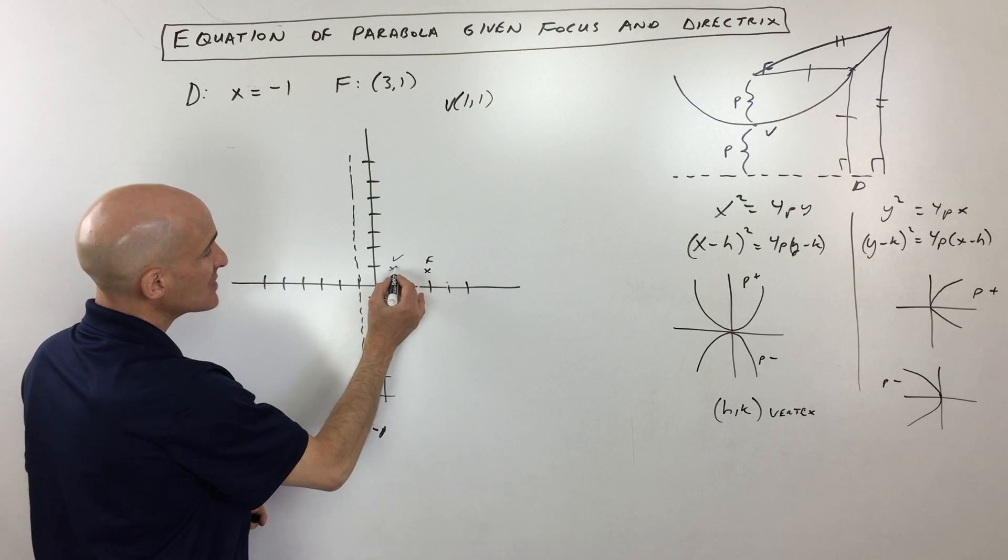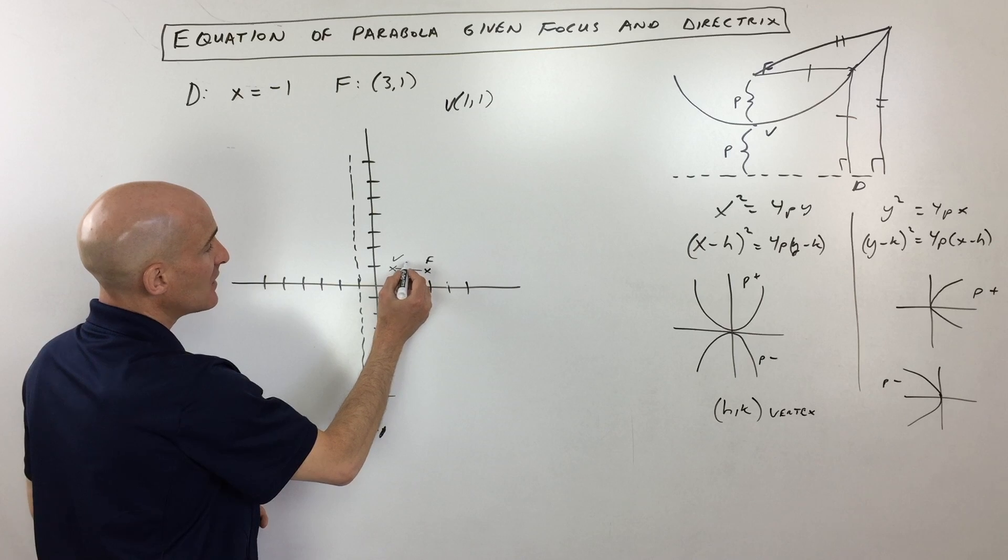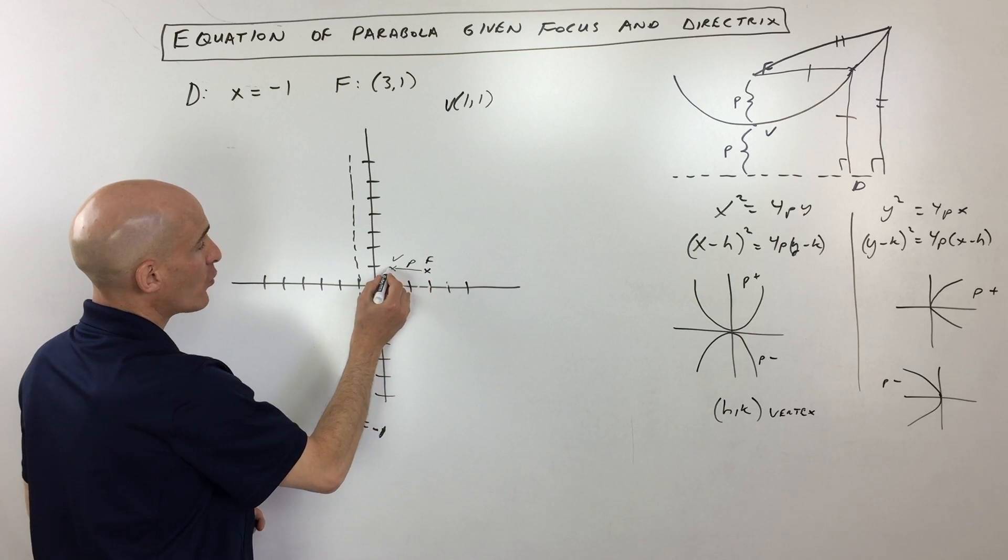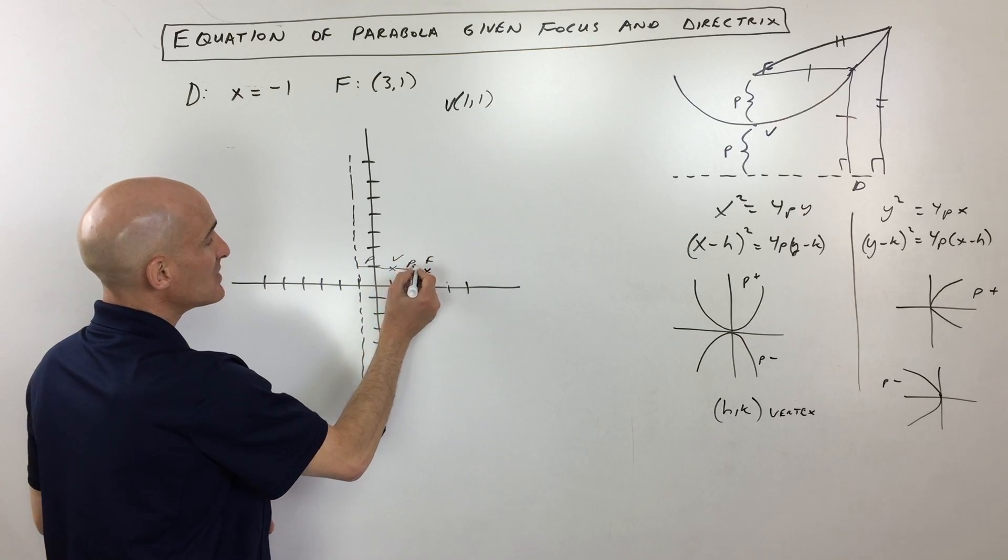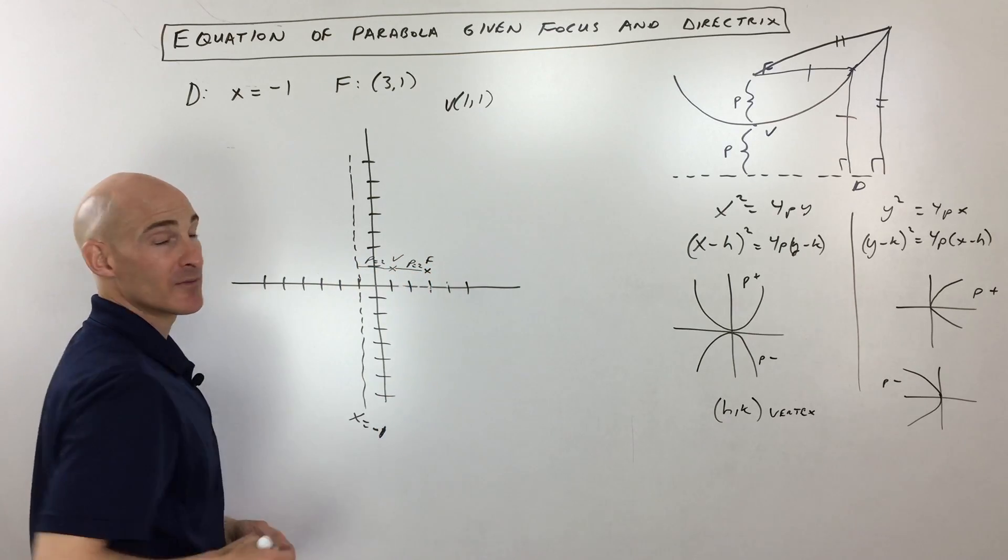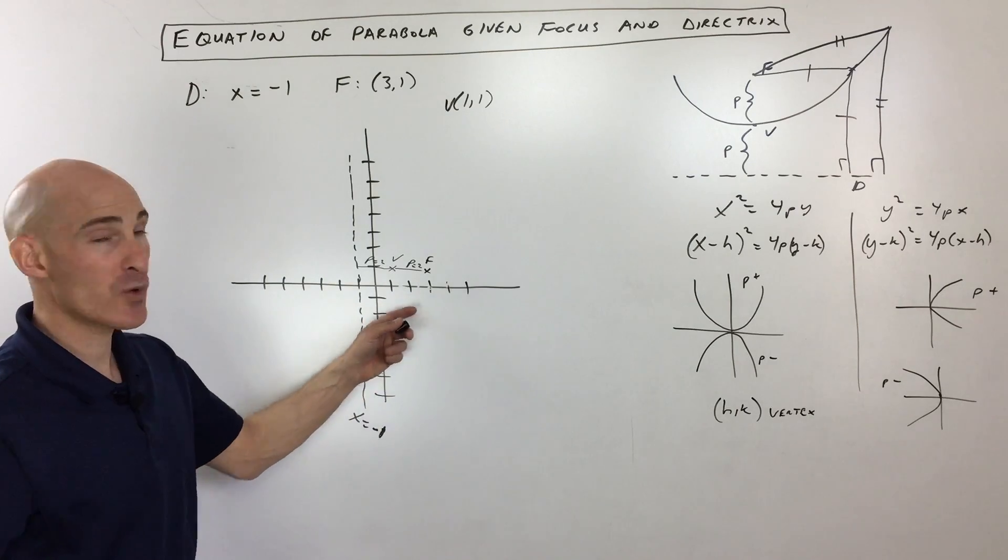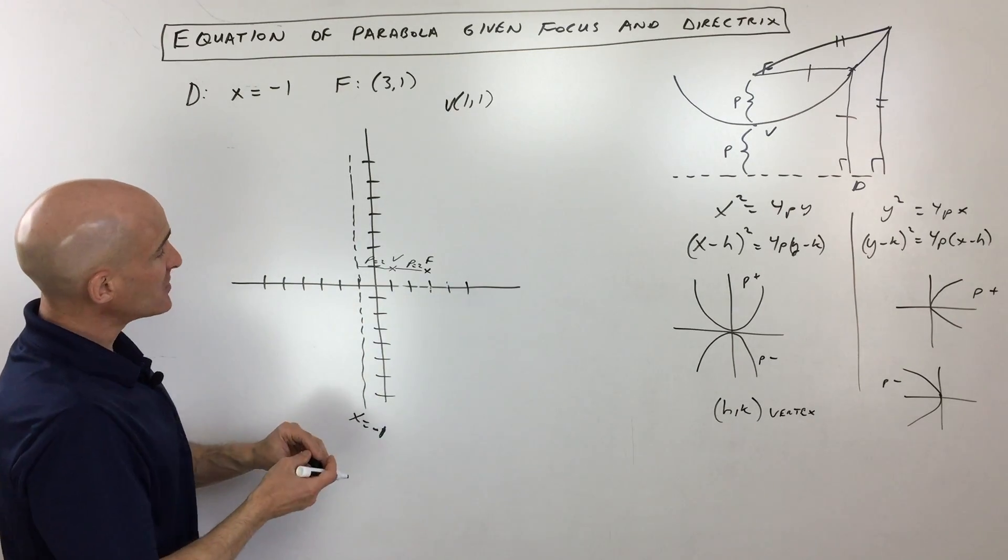Okay, so now the distance from the vertex to the focus, that distance is our p distance, or the vertex to the directrix, that is also p. And you can see that p is equal to two. All right, so that's important when we go to write our equation.